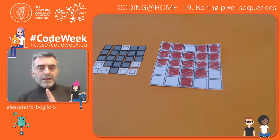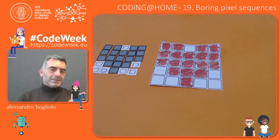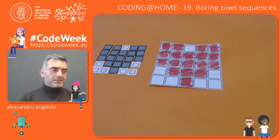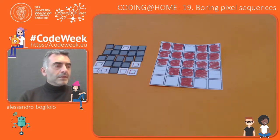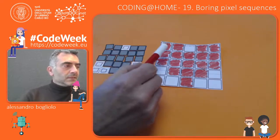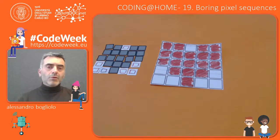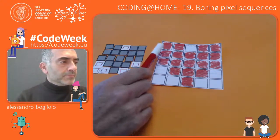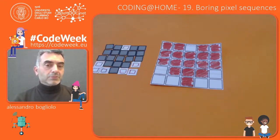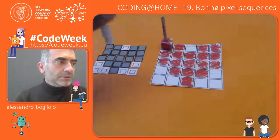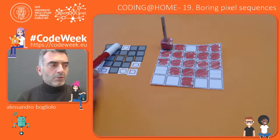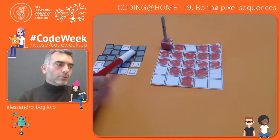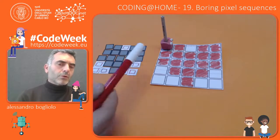This means that the instructions I provided correspond exactly to the pixels I had to color or to skip. When I decided to call this lecture 'boring pixel sequences,' I had in mind these ones — pixel sequences made of pixels all of the same kind, either colored or to be sketched. Because if I wanted to pronounce the instructions to provide to our robot, I'd have to say: color, color, skip, color, color, color, color, color, color, color, color, color, color, color, color, and so on.